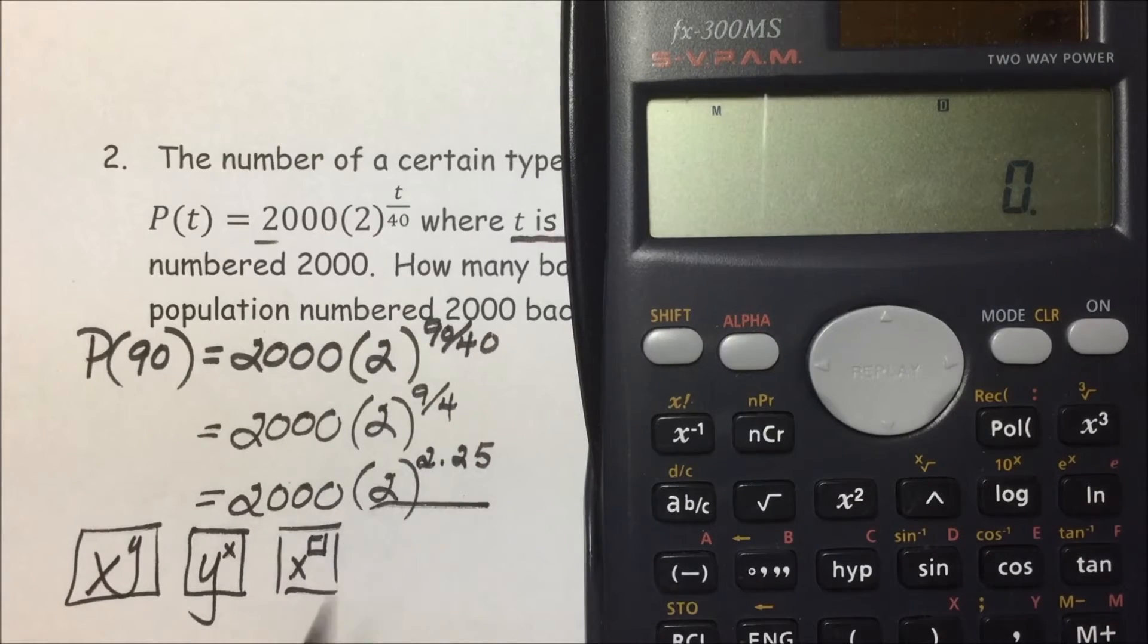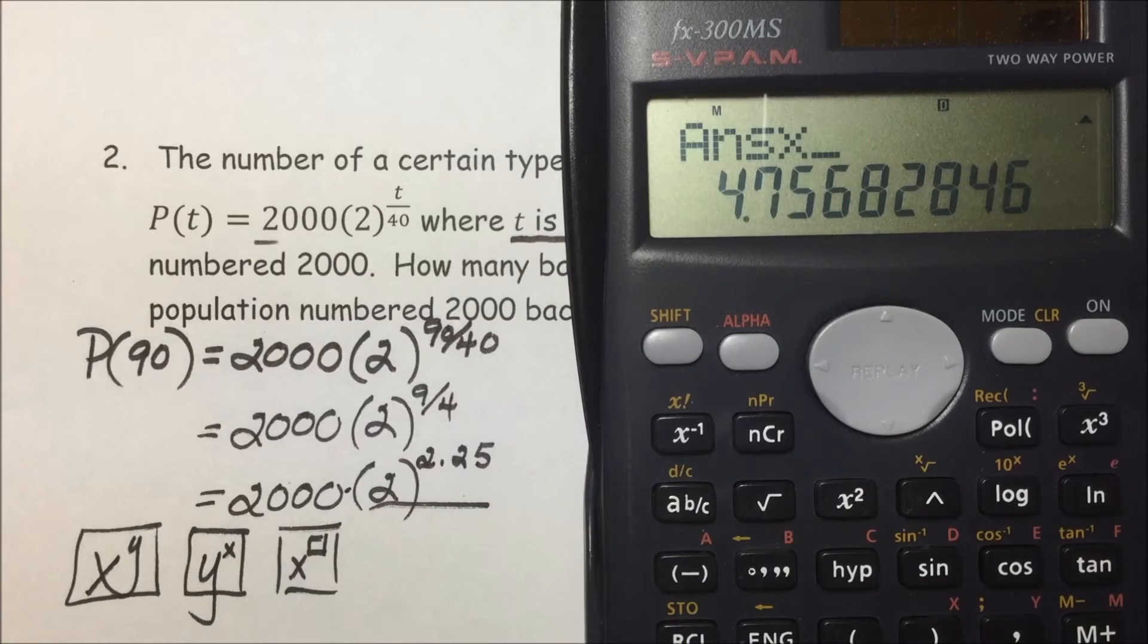Using the calculator that I have, and following order of operations, exponents have the priority over multiplication. I'll take 2 to the, or raise to the, 2.25 power, then multiply that result by 2,000 to get the cell count,